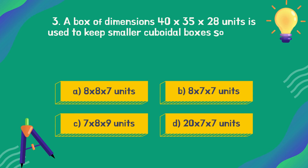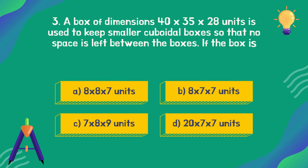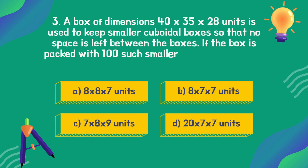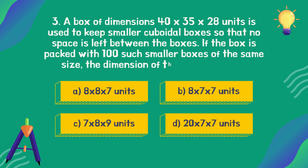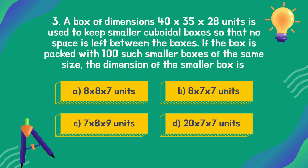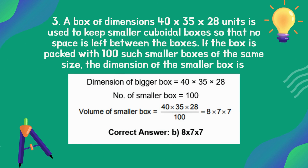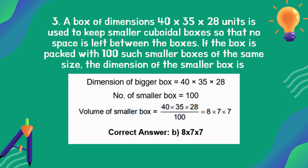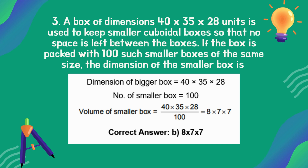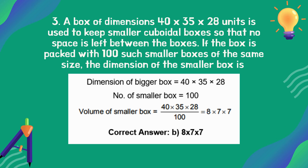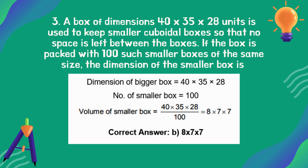A box of dimensions 40 × 35 × 28 units is used to keep smaller cuboidal boxes so that no space is left between them. If the box is packed with 100 such smaller boxes of the same size, what are the dimensions of the smaller boxes? The correct answer is option B: 8 × 7 × 7.